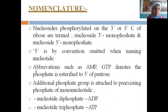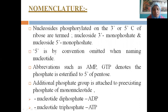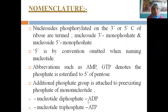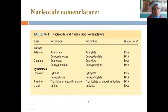Abbreviations like AMP, GTP indicate the number of phosphates and which nucleic acid is present. Additional phosphate groups are attached to the pre-existing phosphate. If two phosphates, it is called diphosphate; if three, triphosphate — adenosine diphosphate and adenosine triphosphate.